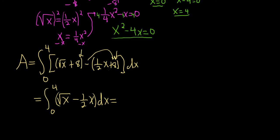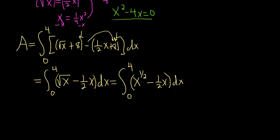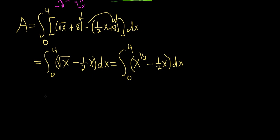Let's write this in a way that will allow us to integrate. So we can write the square root of x as x to the 1 half power. So we can write this as x to the 1 half minus 1 half x. These problems take a long time. It's not a hard problem. It's just computationally intensive. This one might not be too bad, though, because this limit is 0.